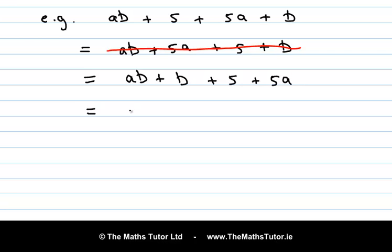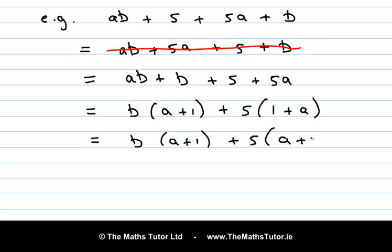So that's equal to b times a plus 1 plus 5a. Now we want to see a common factor between this term and that term. So we need to do a little bit of rearranging here. So that's b times a plus 1 plus 5 times, well 1 plus a is the same as a plus 1. So now we can clearly see the common factor here is a plus 1. So that's a plus 1 times b plus 5. So those are the factors of our original expression.